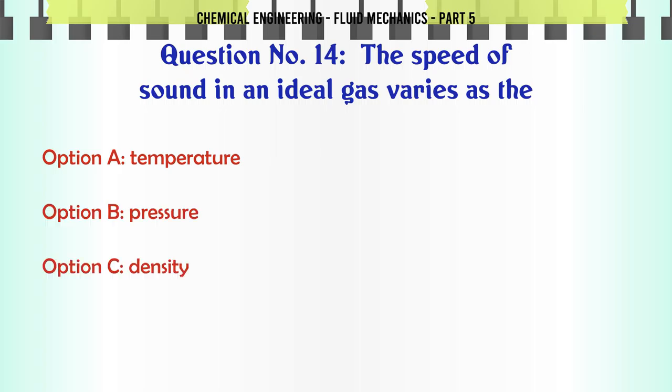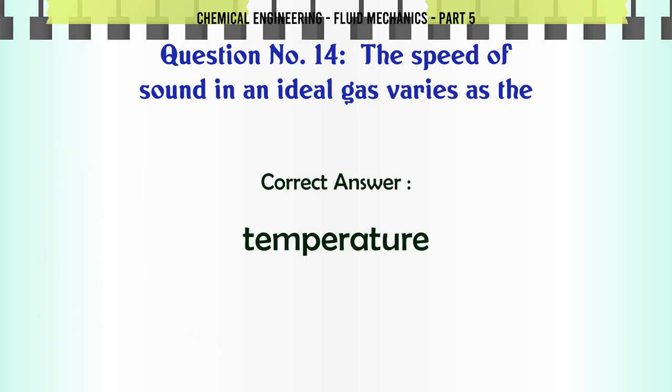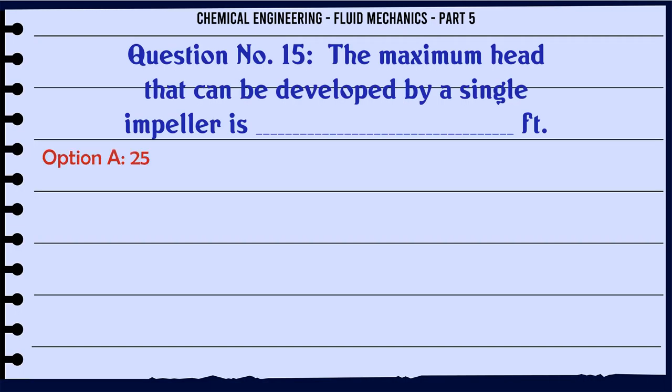The speed of sound in an ideal gas varies as the: a) temperature, b) pressure, c) density, d) none of these. The correct answer is temperature. The maximum head that can be developed by a single impeller is: a) 25 feet, b) 100, c) 200 and 5300, d) 1000. The correct answer is 200 and 5300.